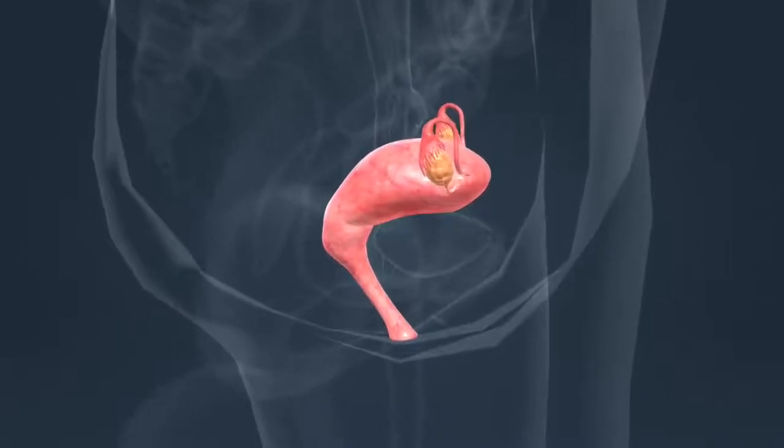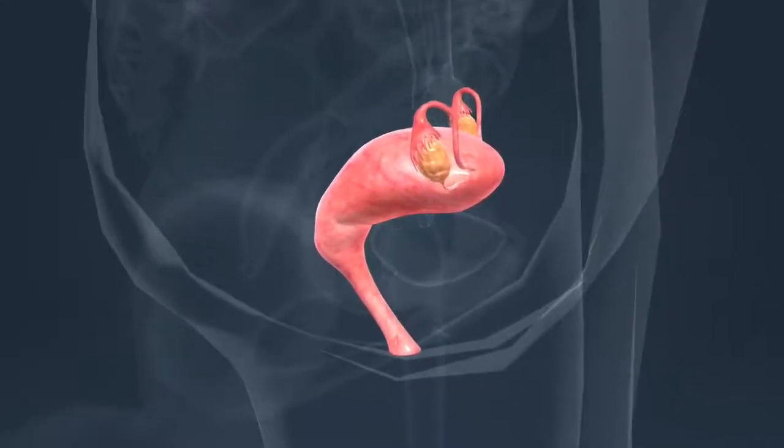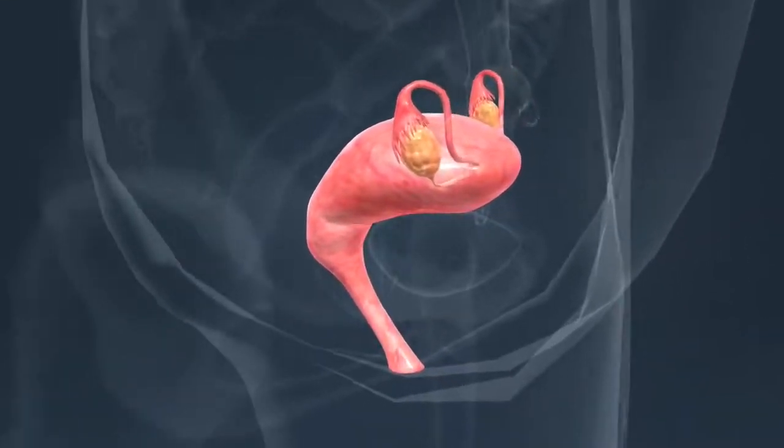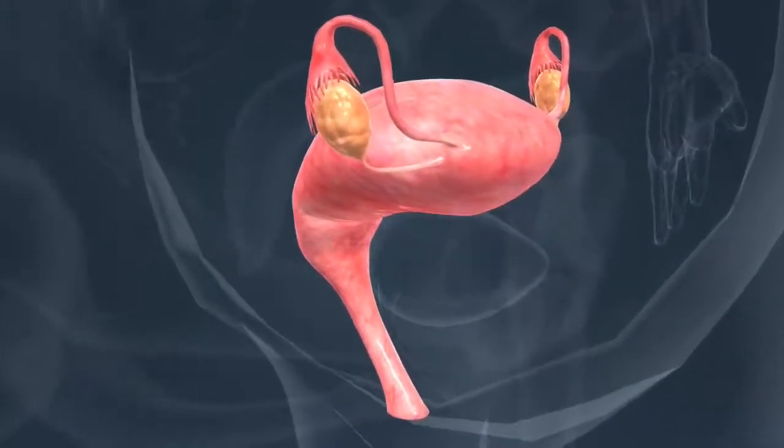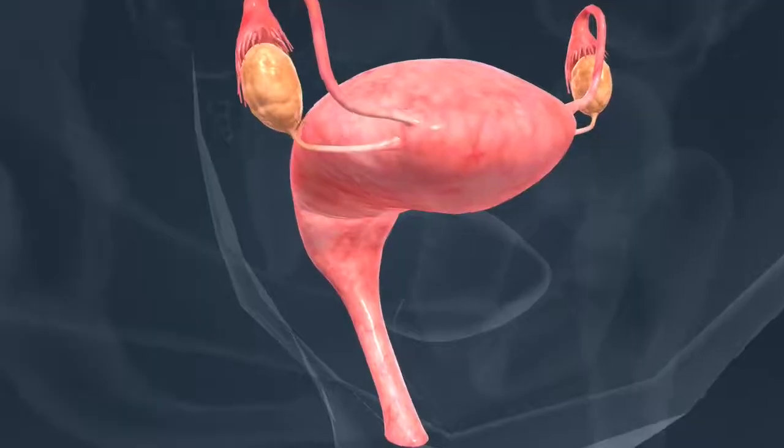Genitalia are responsible for reproduction. They produce gametes. During fertilization, the egg unites with a sperm, and they form a zygote, from which the embryo develops.